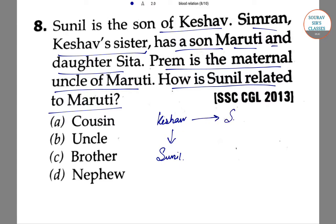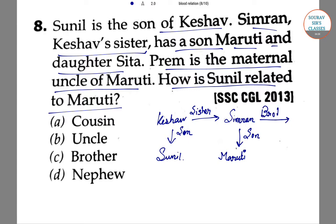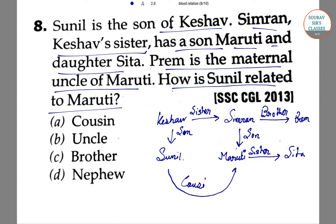Keshav's sister is Simran. Simran's son is Maruti. Simran is the sister and Prem is her brother — making Prem the maternal uncle of Maruti. Maruti and Sita are siblings. Therefore, Sunil is related to Maruti as a cousin.